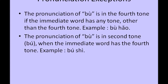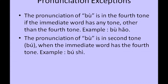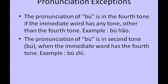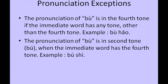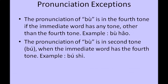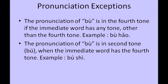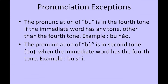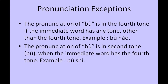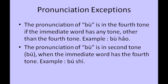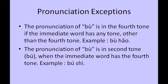Chinese has plenty of exceptions when it comes to pronunciation. We can take 不 as an example. The pronunciation of 不 is in the fourth tone if the immediate word has any tone other than the fourth tone. For example, 不好 — 不 remains in the fourth tone as 好 is in the third tone. However, when two consecutive words have the fourth tone, the first word is pronounced in the second tone. For example, 不是, which means wrong or not right — 不 is pronounced in a rising tone while 是 remains in the fourth tone.